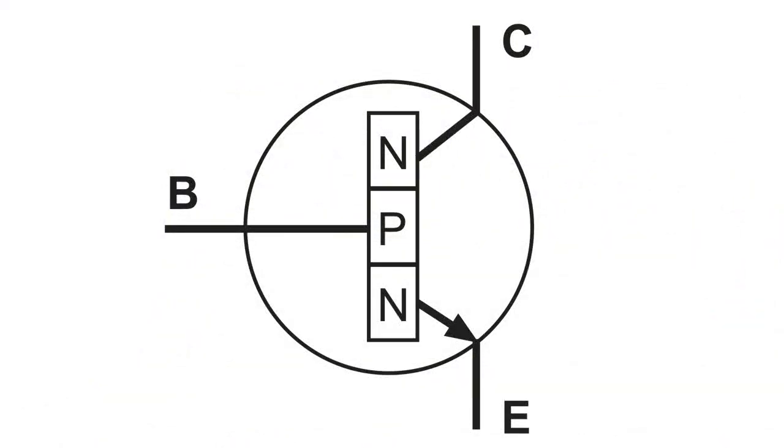Now we'll test an NPN transistor. And the polarity is just the opposite. That diode will conduct when the base is positive and E or C is negative. And here's the configuration we're going to use to determine which lead is E and which lead is C.